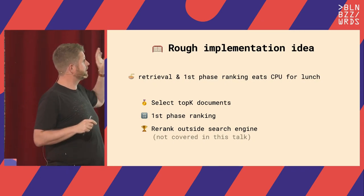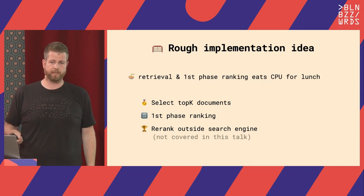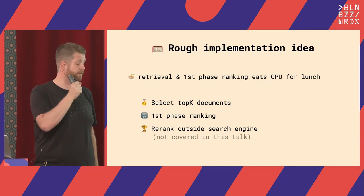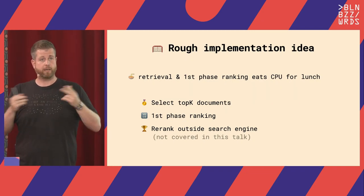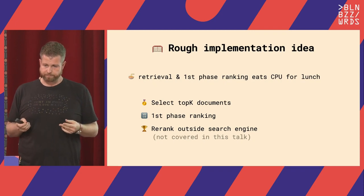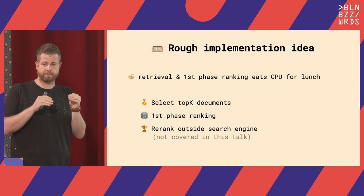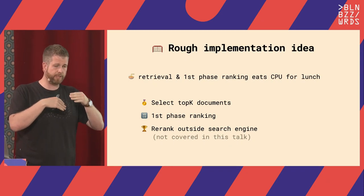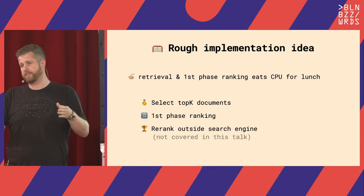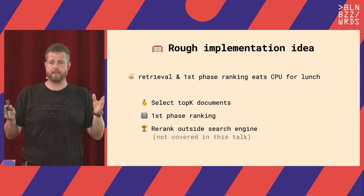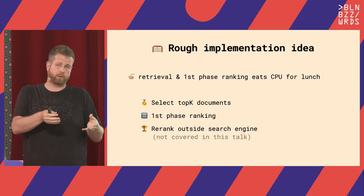The basic problem was that retrieval and first-phase ranking basically ate CPU for lunch. If you're driving a Solr cluster, it needs CPU, RAM, and IOPS all at the same time in huge amounts, and there's always pressure on that. The problem was: when we saw results exceeding a certain number of documents — like 60K or 100K result sizes — they were exceeding the cache size, and everything just goes very slow on the nodes.